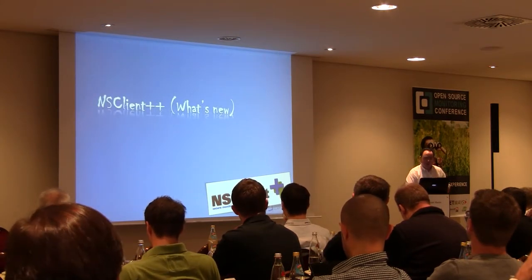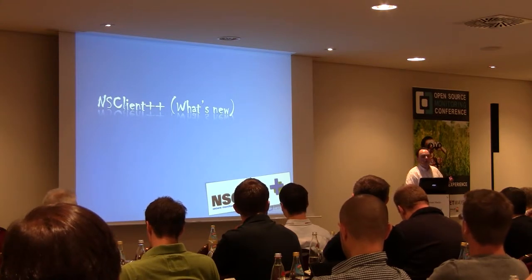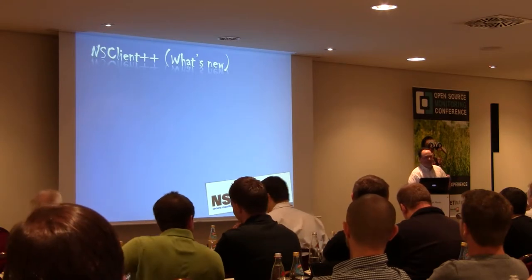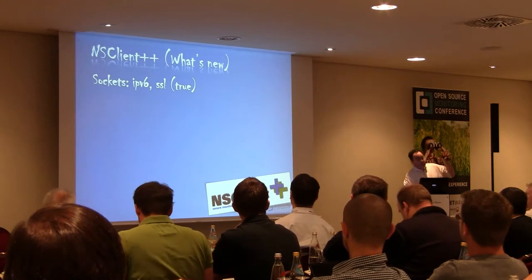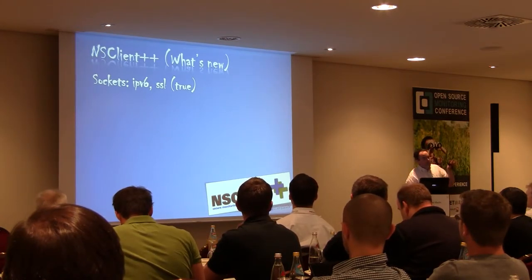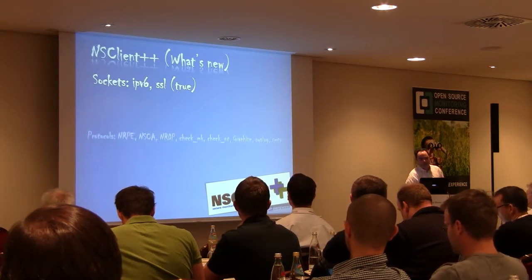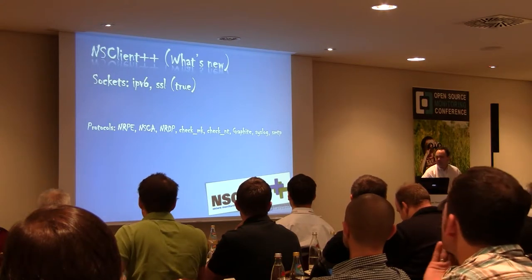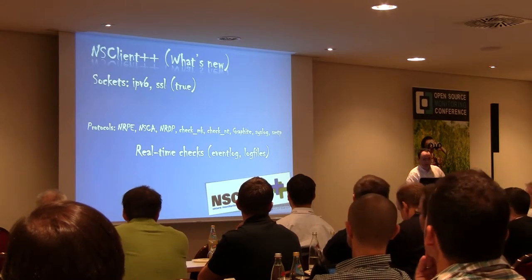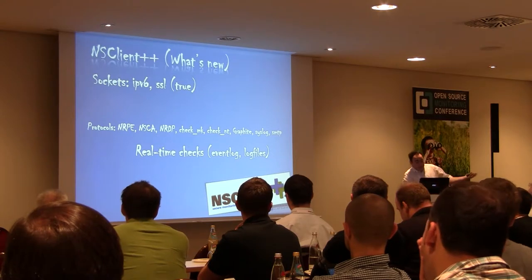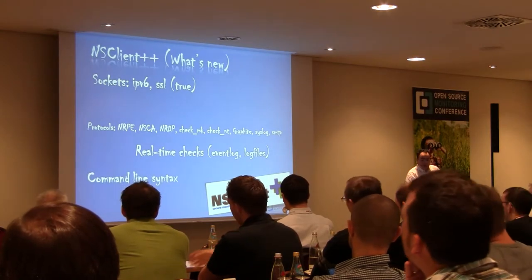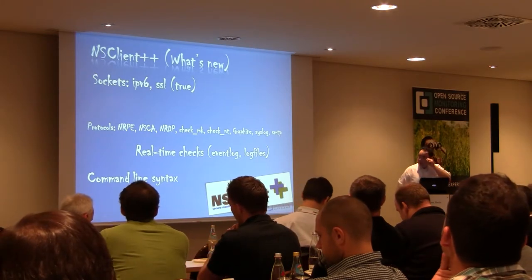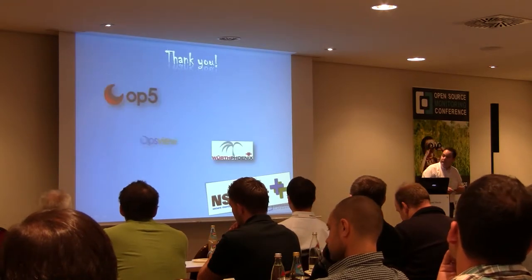Someone asked me yesterday about the new version so I quickly compiled the highlights from 0.4.1. The top five interesting things: first, sockets — we now have IPv6 support and true SSL support with certificates, not the NRPE pseudo-SSL. We also support a lot of protocols. We have real-time checks, which I'll demonstrate with the log file checker. And there's a new command line syntax.